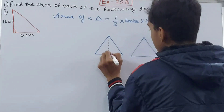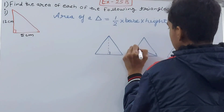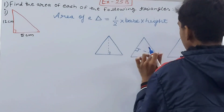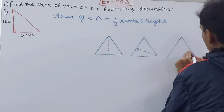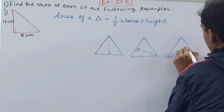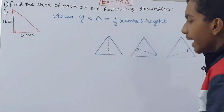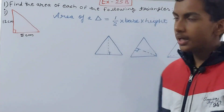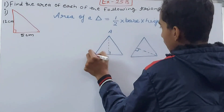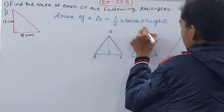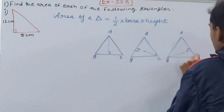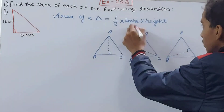I've drawn dotted lines in each of the three triangles. You can label these triangles A, B, C. Now look carefully at each triangle and try to understand what is the base and what is the height.